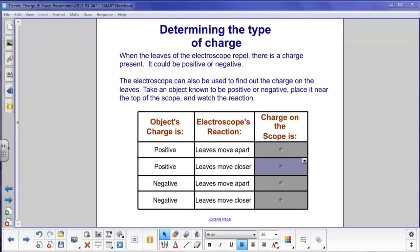Well, what's happening there? More positive charge is being pushed down from the top of the scope into the leaves, so they move further apart. That seems to indicate that the existing charge is positive.